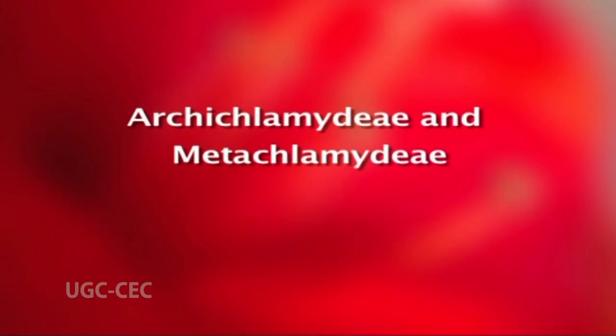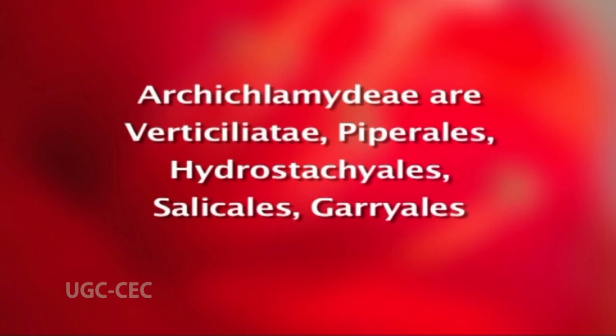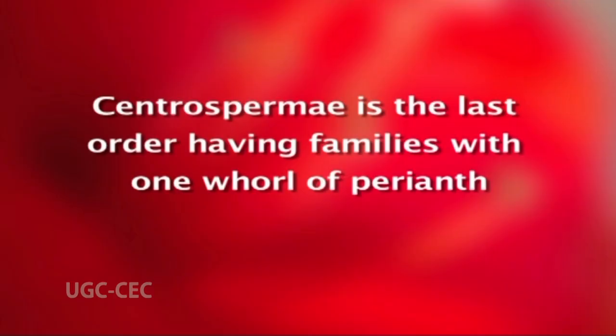The order Glumiflorae, which includes Gramineae, is the fourth order and due recognition is not given to its advanced characters. The class Dicotyledoneae is divided into two subclasses: Archichlamydeae and Metachlamydeae. In Archichlamydeae, the first families are achlamydeous or monochlamydeous and the later ones are dicotyledonous and polypetalous. The first orders of Archichlamydeae are Verticillatae, Piperales, Hydrostachyales, Salicales, Garryales, etc., which have naked unisexual wind-pollinated flowers and catkins or aments. The achlamydous families are followed by monochlamydous ones; Centrospermae is the last order having families with one whorl of perianth.